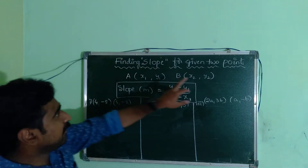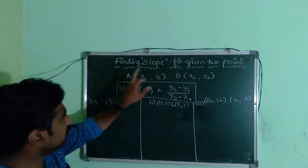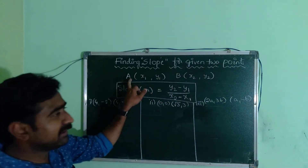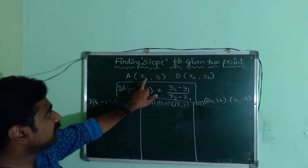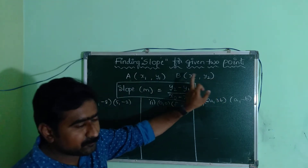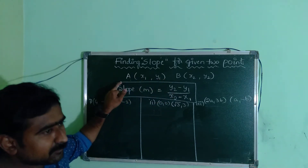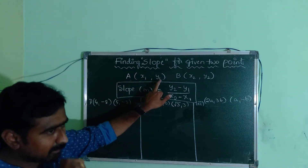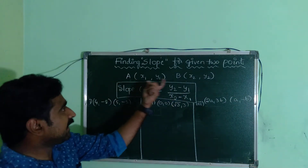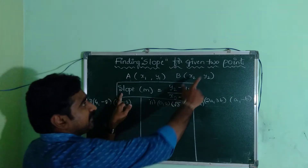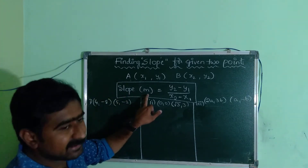Our two points are capital A and capital B. Capital A has coordinates x1, y1 and capital B has coordinates x2, y2. We are going to indicate the slope with the letter small m.